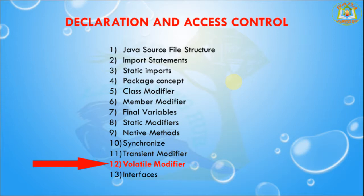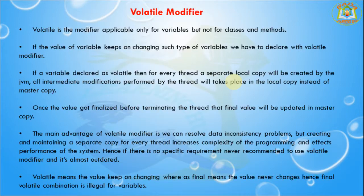Volatile means the value keeps on changing, whereas final means the value never changes. Hence the final and volatile combination is illegal for variables.